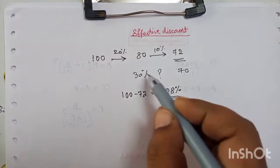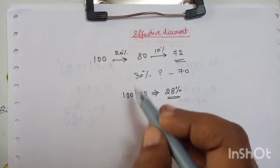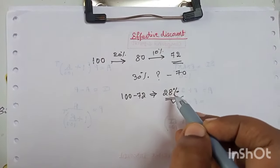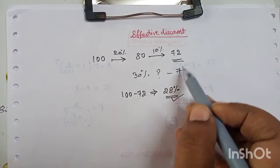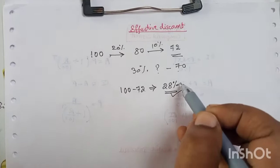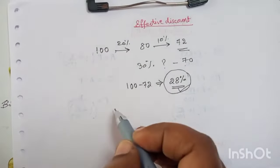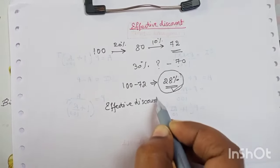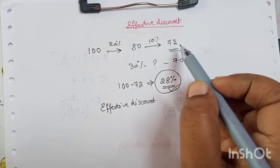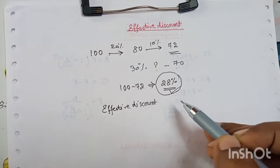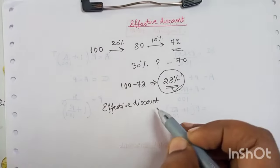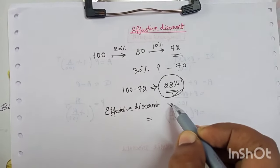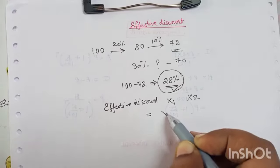So what is better: giving a lump sum discount of 30% or multiple successive discounts? Multiple discounts are better for the seller, because instead of selling at 70 rupees you sell at 72 rupees. To find effective discount without solving step by step — finding the final price and subtracting from the original price and then finding the percentage — that is a lengthy process, so we use a formula.